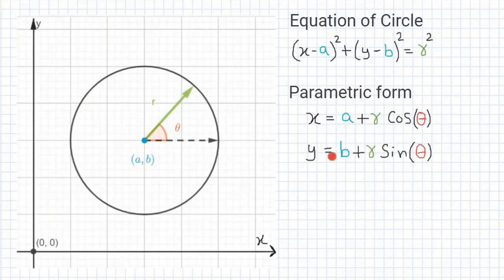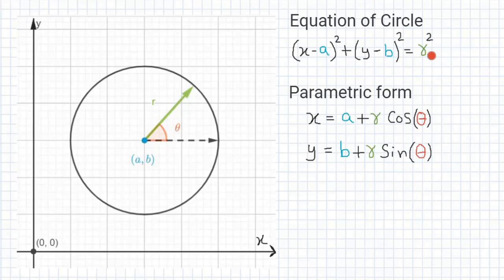So let's get started. The first thing is we need to understand what a circle is and how a circle is drawn. Given a circle with center (a, b) and radius r, the equation of the circle is given by (x - a)² + (y - b)² = r². The parametric form is x = a + r·cos(θ), y = b + r·sin(θ).